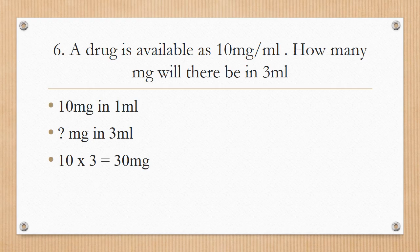A drug is available as 10 milligrams per milliliter. For 3 milliliters: 10 × 3 = 30 milligrams.